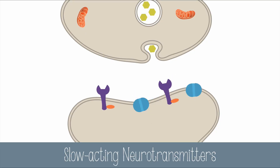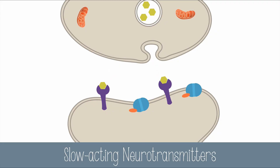Slow-acting neurotransmitters are also called neuromodulators. It will take hundreds of milliseconds for these neuromodulators to trigger an action in the postsynaptic cell. This is in part because they use secondary messengers to affect ion movement. These neurotransmitters are often not reabsorbed or broken down, so they spend more time in the area and can affect more neurons.